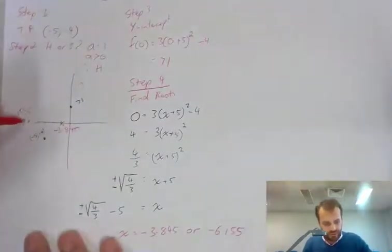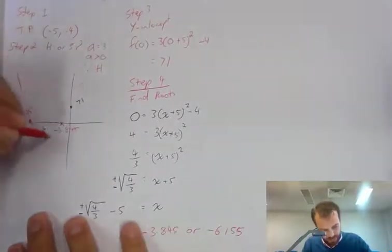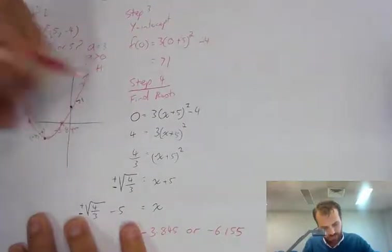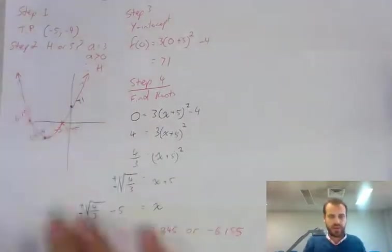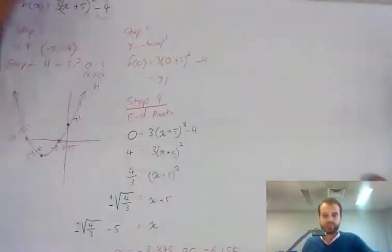Okay, so now I've got four points. Boom, boom, boom. I just join them up with a nice sort of curve, and there I have sketched my function with four steps. Thank you.